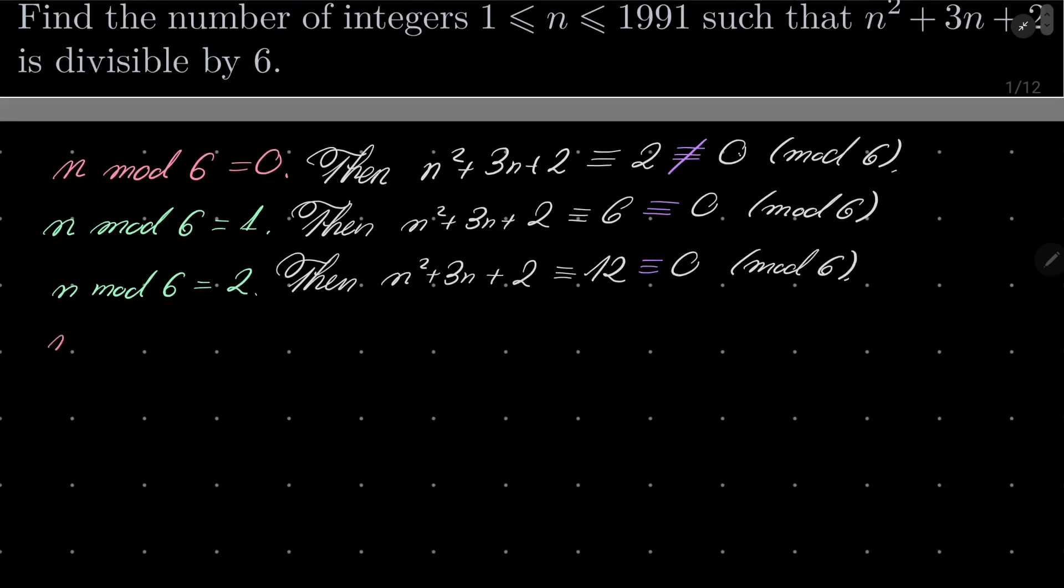n ≡ 3 (mod 6). Then n² + 3n + 2 is congruent to 3² = 9, plus 9 is 18, plus 2 is 20. 20 is not congruent to 0 modulo 6. Okay, next case.